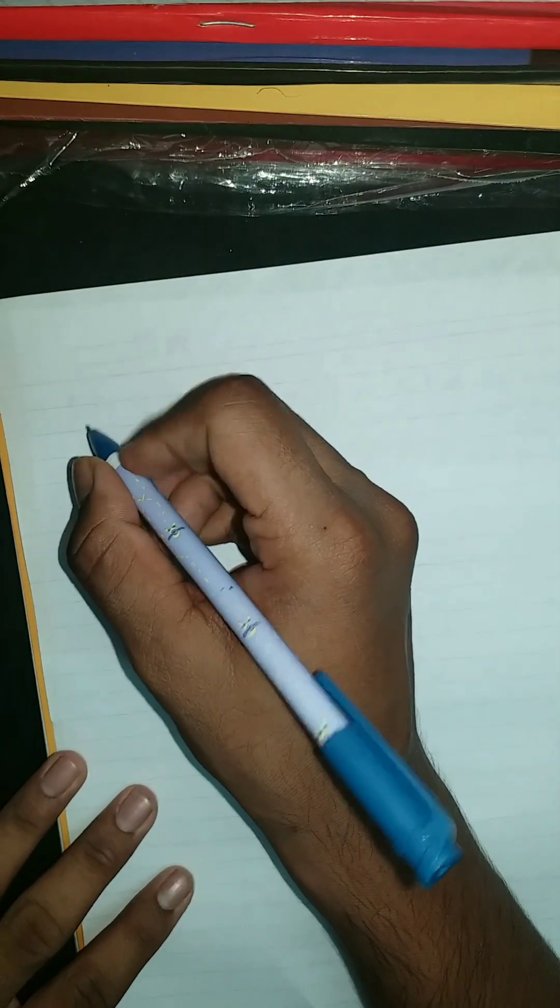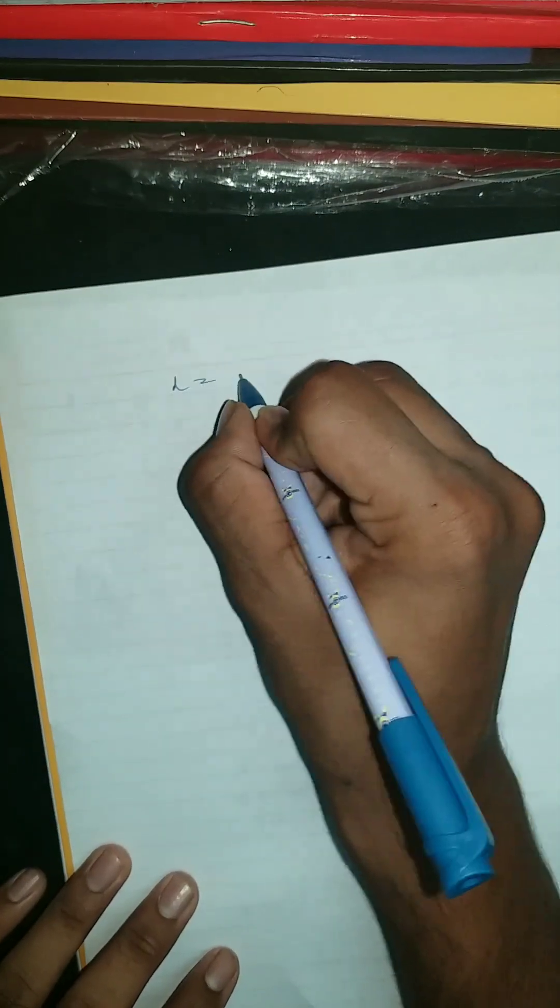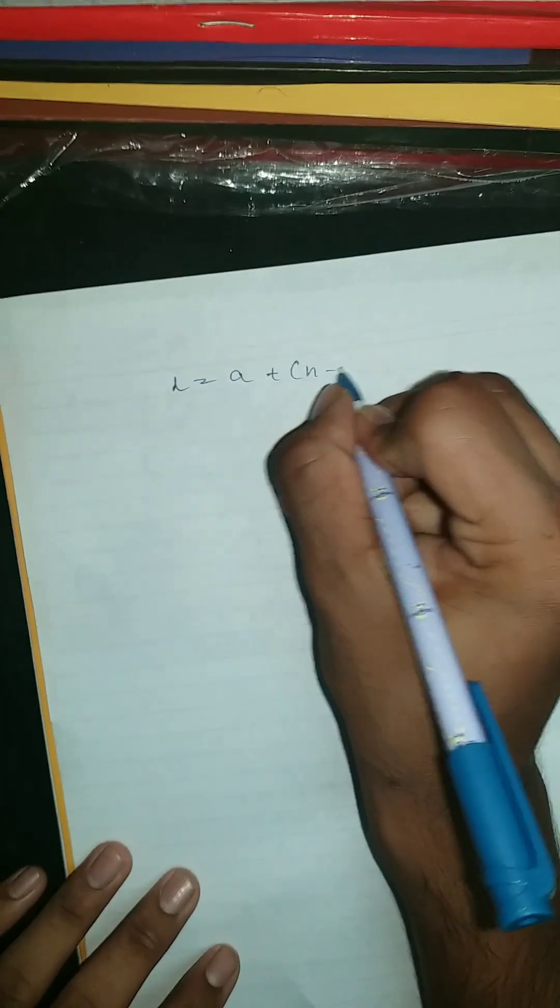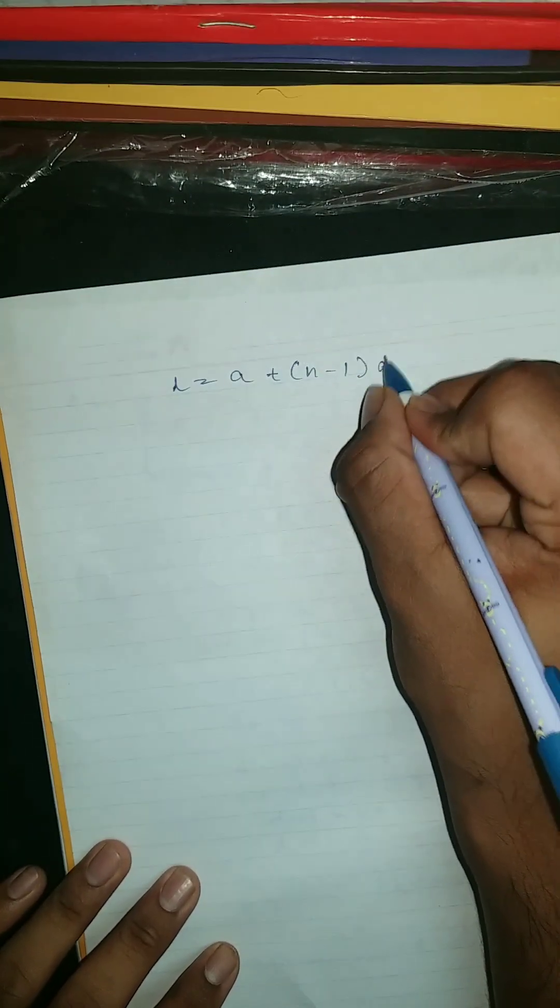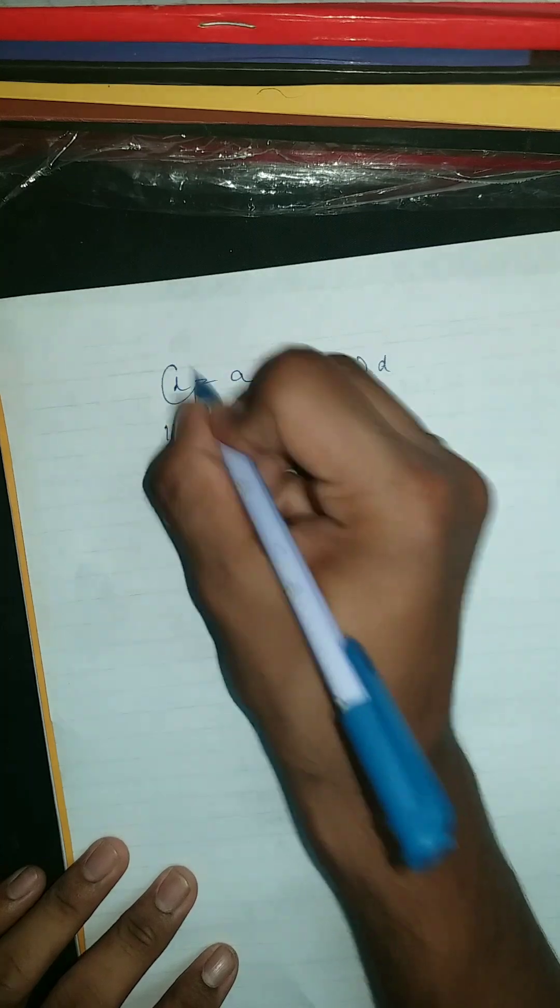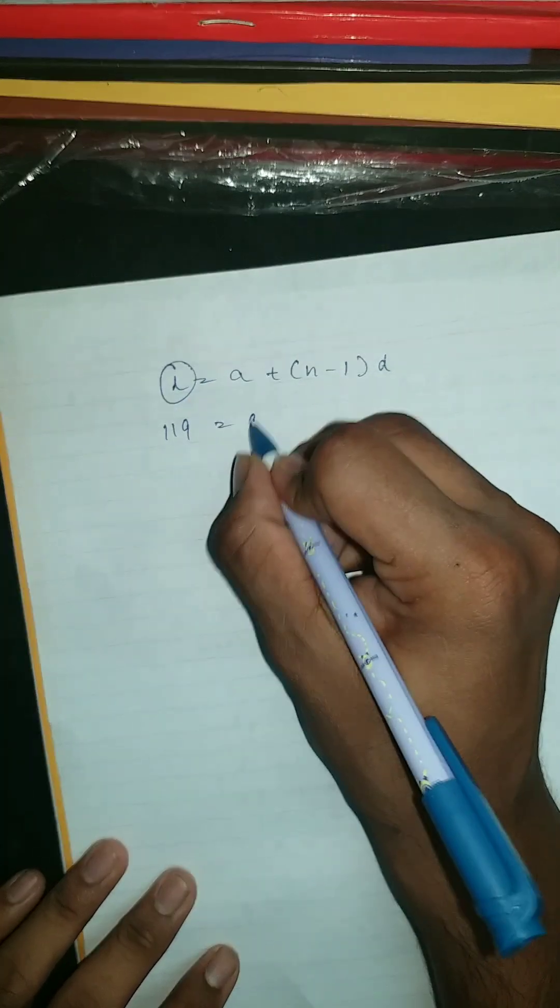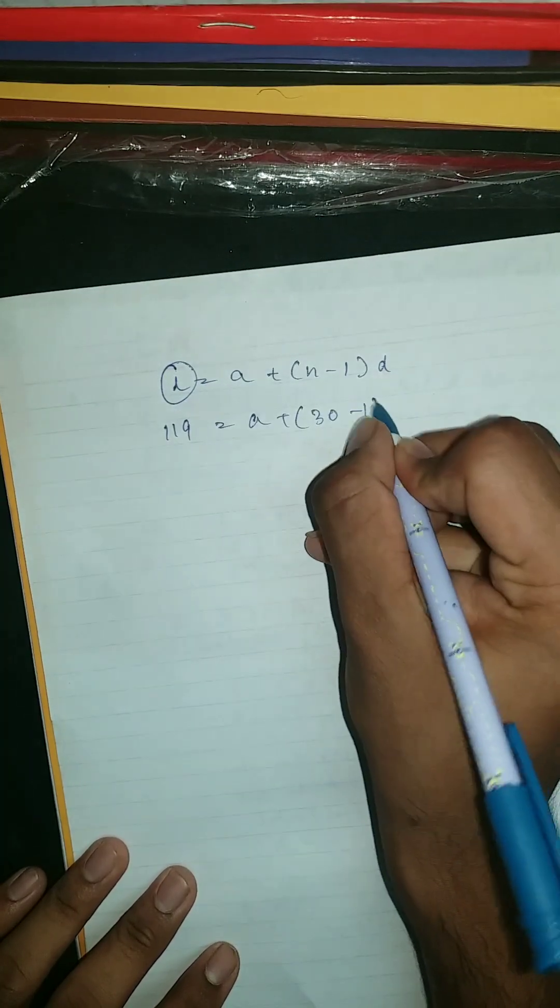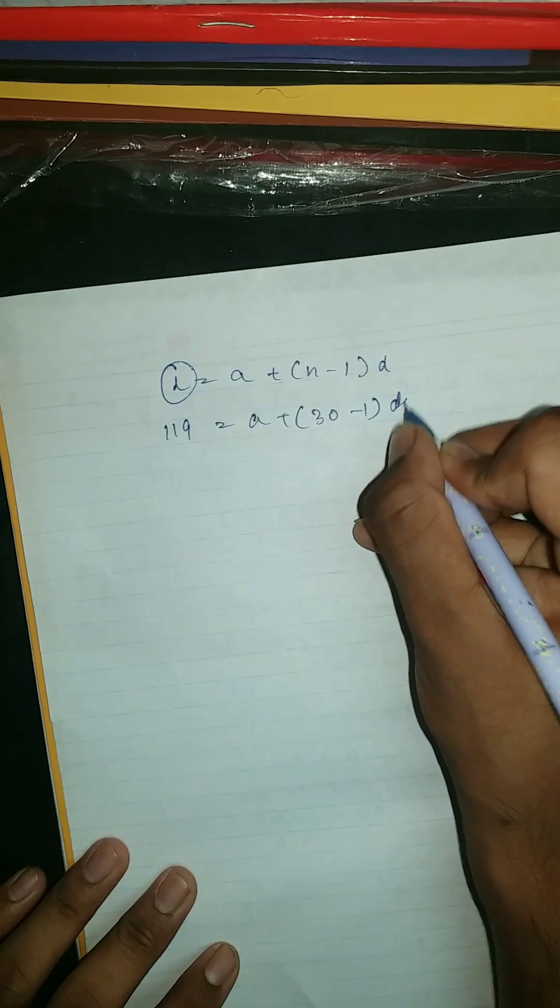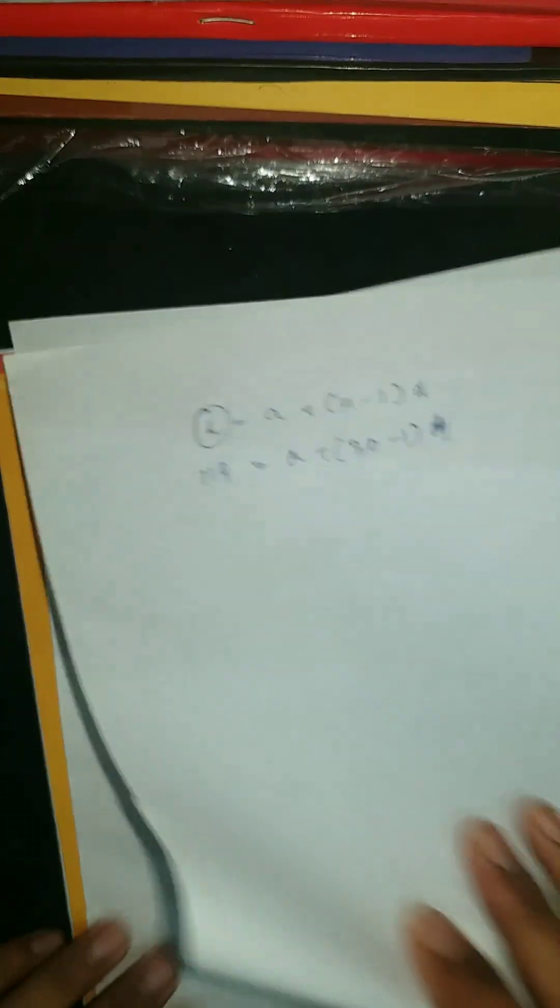Now what we are going to find? We are going to find by using the formula of AP, so it should be L is equal to A plus (n-1)D. 119, as we know, equals A plus (30-1) times 4, the difference is 4.